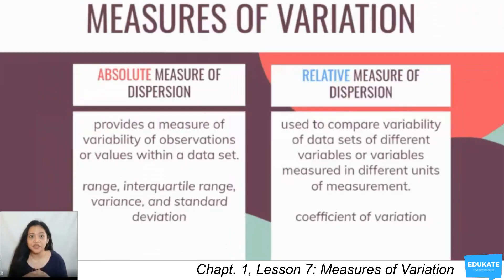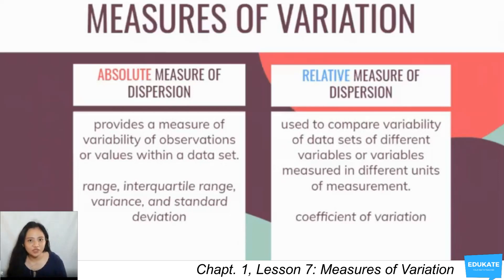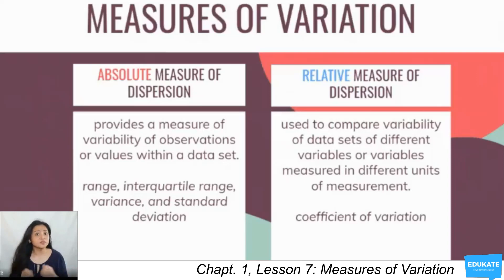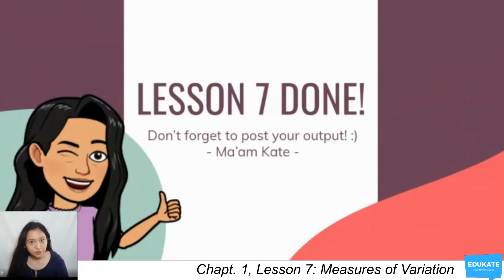To summarize: absolute measures of dispersion compare variability within a data set and include range, interquartile range (IQR), variance, and standard deviation. Relative measures of dispersion — specifically the coefficient of variation — are used to compare variability between data sets or variables measured in different units. That concludes Lesson 7. Don't forget to practice computing variance and standard deviation using your scientific calculators and to post your output.